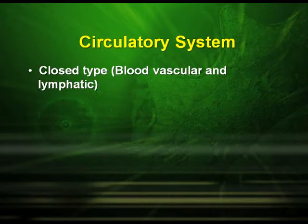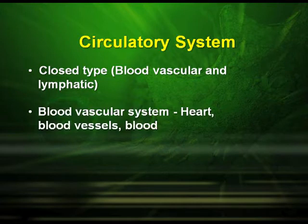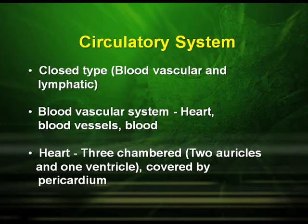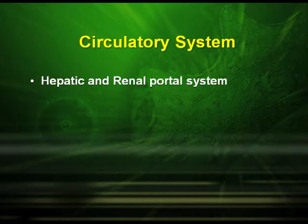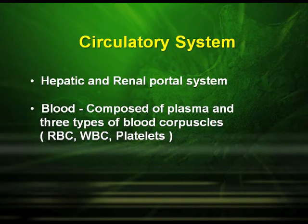Circulatory system: frogs have a closed type of circulatory system which includes the blood vascular system and the lymphatic system. The heart is three-chambered, with two auricles and one ventricle covered by pericardium. It has the hepatic and renal portal system. Blood is composed of plasma and three types of blood corpuscles: red blood corpuscles, white blood corpuscles and platelets.